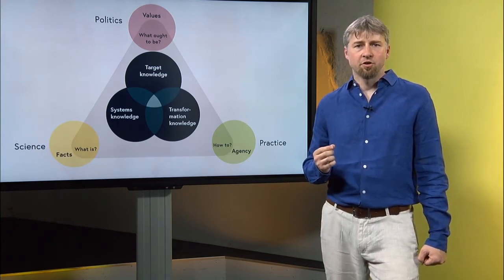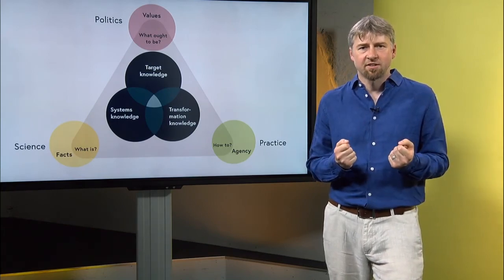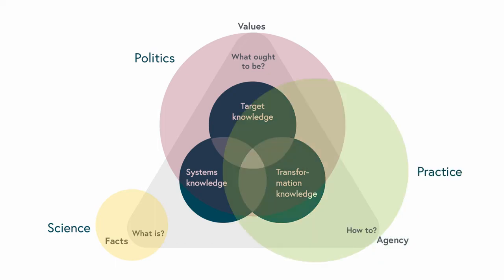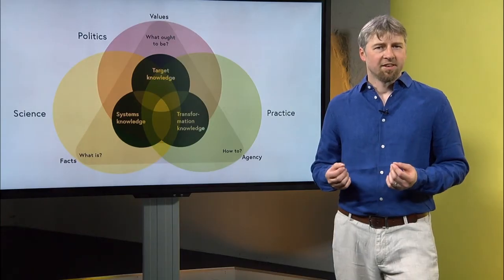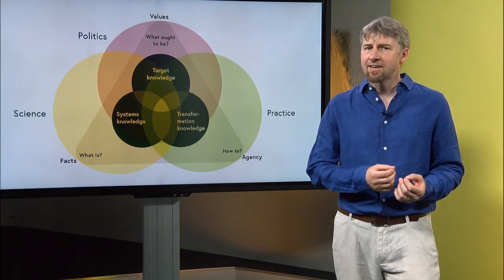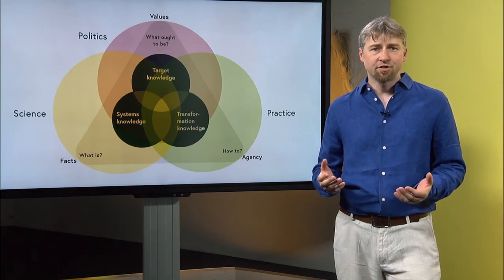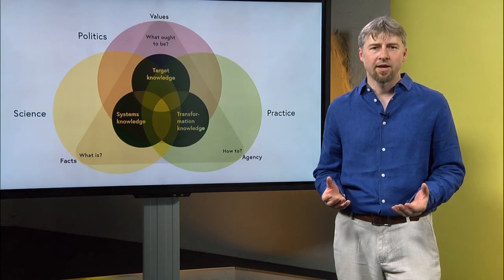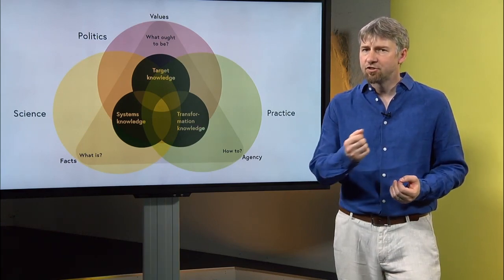It is important to note that the separation of spheres is very reductionist. Actors from the political and practical sphere are also important holders of systems knowledge. Some scientists, for example ethicists, work explicitly on values, while others, for example engineers, work on transformation knowledge. Every research question is already a normative decision on what topic to focus on. As the knowledge types are overlapping and interdependent, the spheres of influence of the different societal actors are not independent. In this regard, transdisciplinarity can be seen as working within and creating spaces at the intersection of all three spheres.